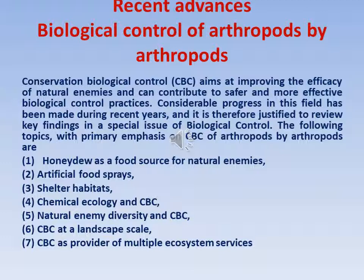Recent advances in biological control: conservation biological control is gaining importance. We must conserve biocontrol agents and provide food and nutrition for them for sustainable agriculture. Concepts include: providing honeydew as a food source for natural enemies, artificial food sprays, providing shelter habitats, chemical ecology and conservation biological control, natural enemy diversity and CBC at landscape scale, and CBC as a provider of multiple ecosystem services.